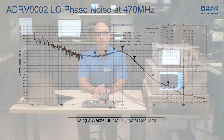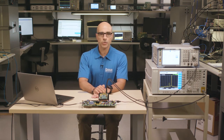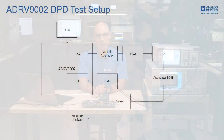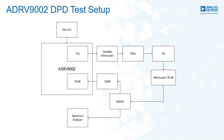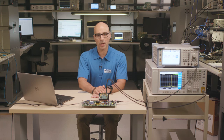Another key feature on the ADRV9002 is the transmitter digital predistortion, or DPD. This is a block diagram of a DPD test setup where the transmitter output signal is fed to a PA using a variable attenuator and a harmonic filter. A coupler with 30 dB attenuation feeds back a portion of the PA signal to one of the RX inputs on the ADRV9002. This is done through a splitter where we can also observe the PA output on a spectrum analyzer.